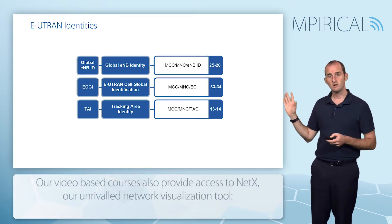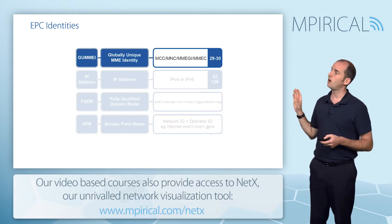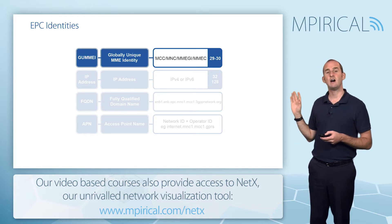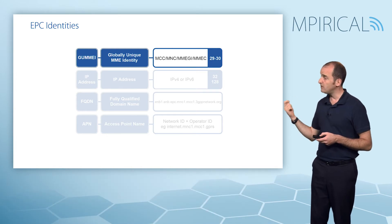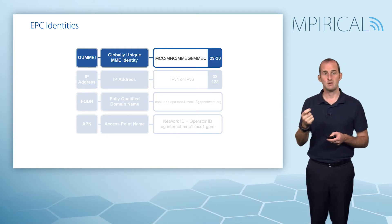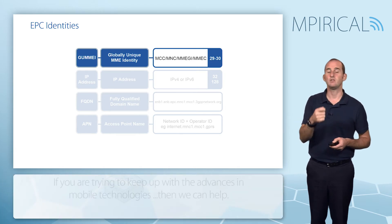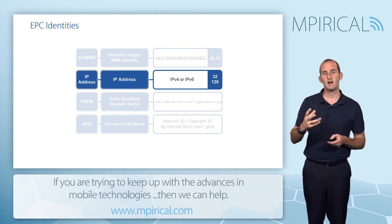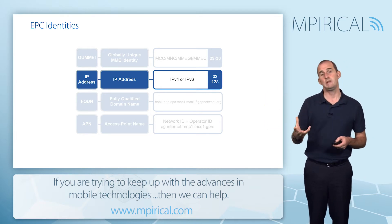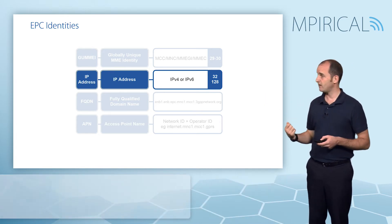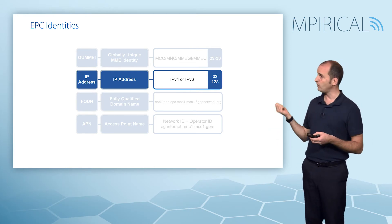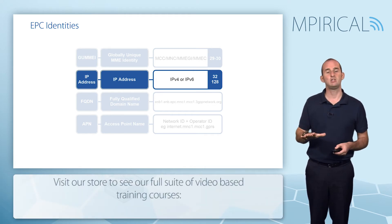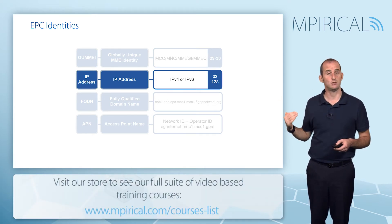Moving on to the evolved packet core — we've already discussed the Globally Unique MME ID, which is a unique identity for the MME, so every MME around the world will have a unique ID. We also have IP addressing for all of our network nodes. The eNodeB, serving gateway, MME, and PDN gateway all have IP addresses. These are not in relation to the packet data network as discussed with user equipment — these IP addresses are associated with the underlying transport network.